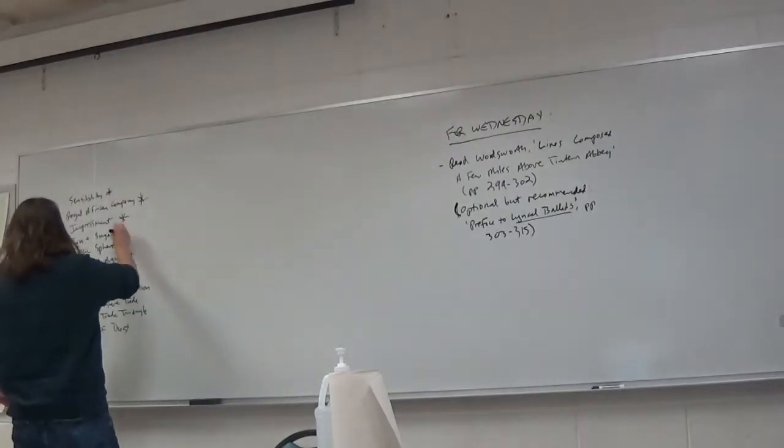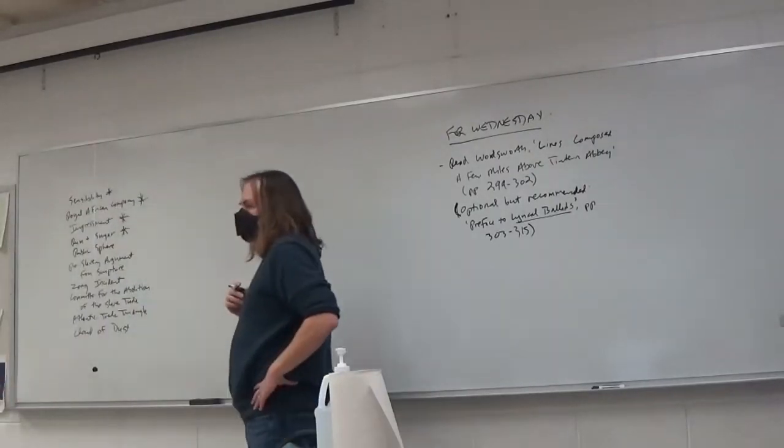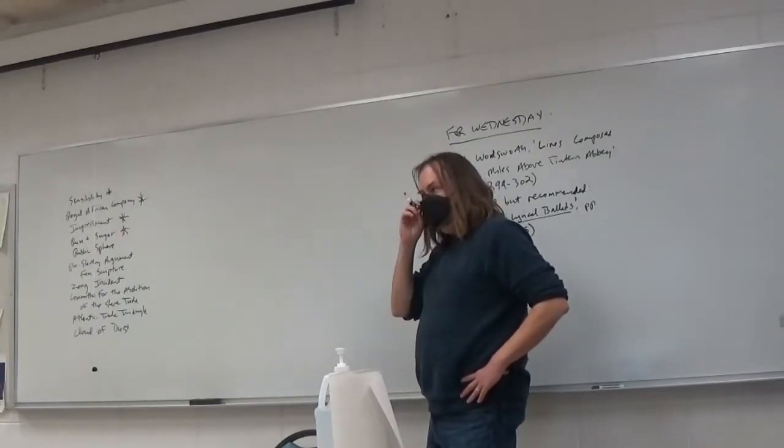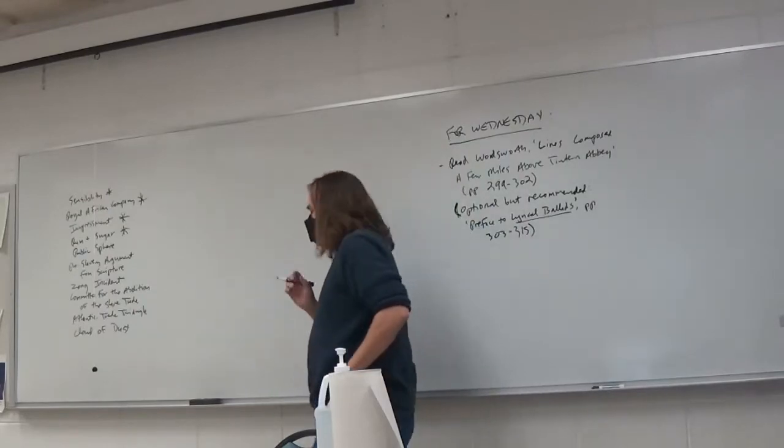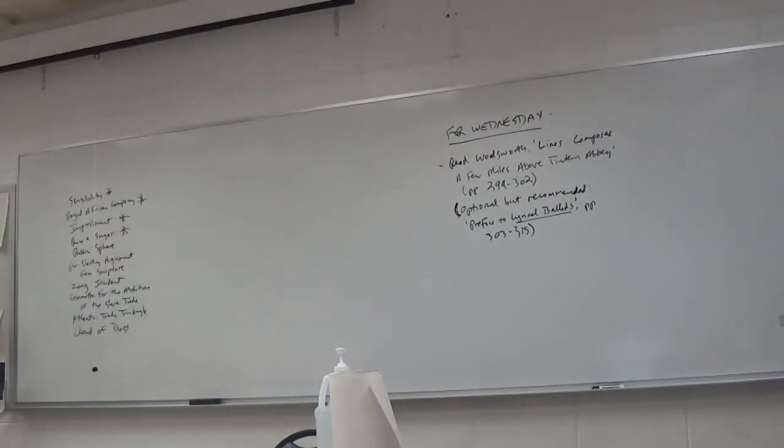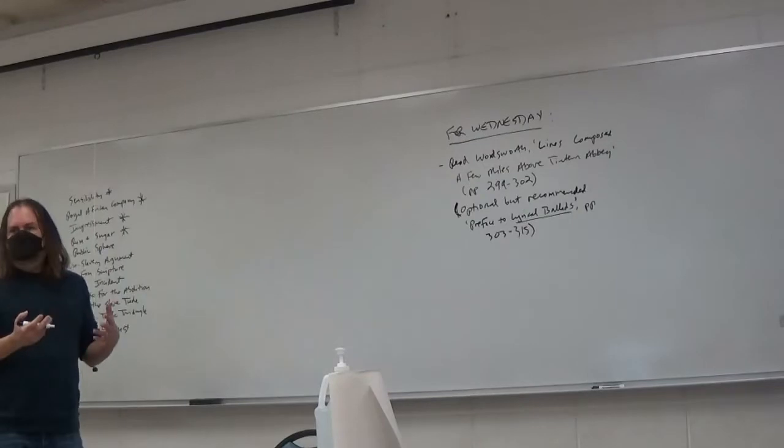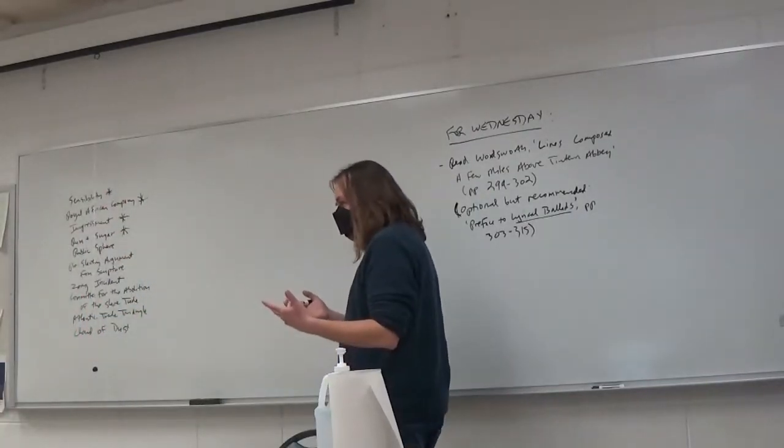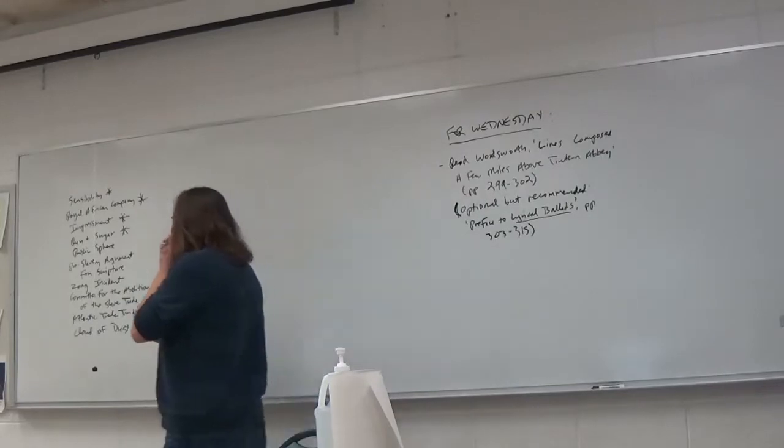What about rum and sugar? They were useless luxuries that the slaves had to produce. Yeah, these were useless luxuries, or at least from Bellridge's perspective, useless luxuries. Produced by slave labor in the West Indies that he was trying to encourage people to boycott.